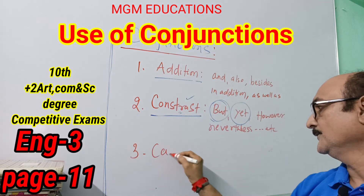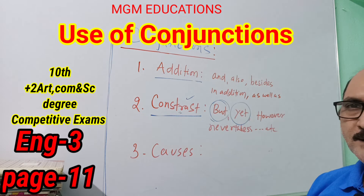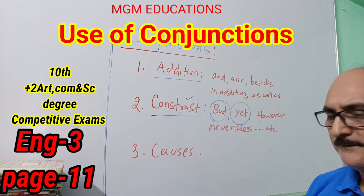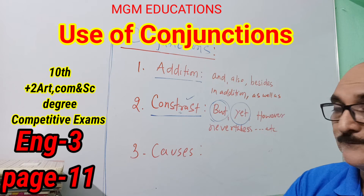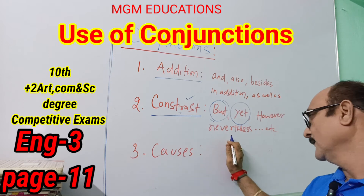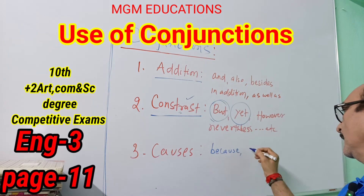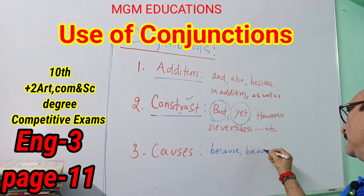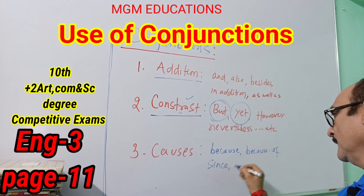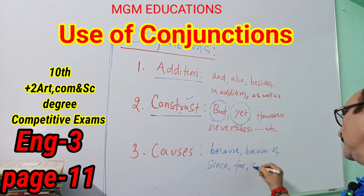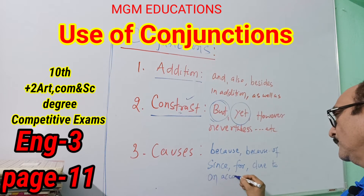The third type is conjunctions of cause. Which are the cause conjunctions? These include: 'because', 'since', 'for', 'due to', 'on account of'.